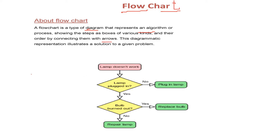Here is a simple example where we have various symbols: an arrow, a diamond, some conditions, and start/stop symbols. The example shows: if a lamp doesn't work, we check whether the lamp is plugged in. If it is not, we plug the lamp. If the lamp is plugged in, we check whether the bulb is burned out. If yes, we replace the bulb; otherwise, we repair the lamp.